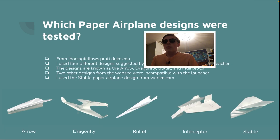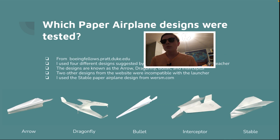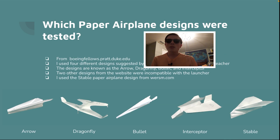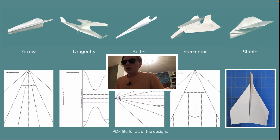The paper airplane designs were tested from boeingfellows.pratt.duke.edu. I used four different designs suggested by my science teacher. The designs were known as the arrow, dragonfly, bullet, and interceptor — the other designs from the website were incompatible with the launcher I was using. I used the stable paper airplane from another source just to have a fifth design. You can see all the different designs there — the dragonfly is the most interesting to look at because it's probably the most different of all of them.